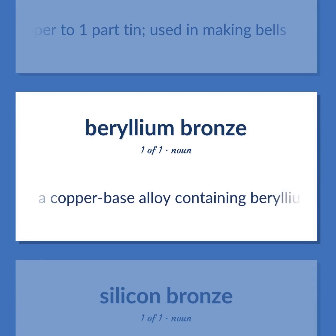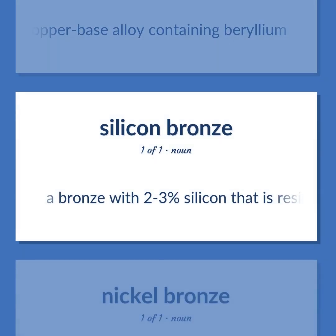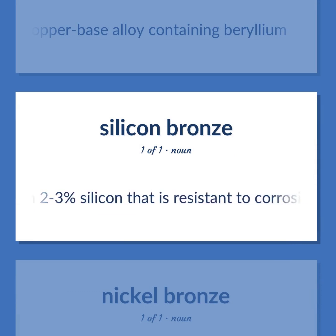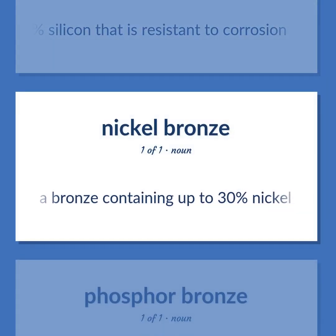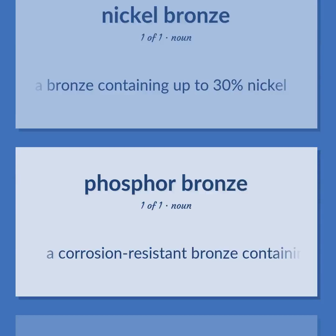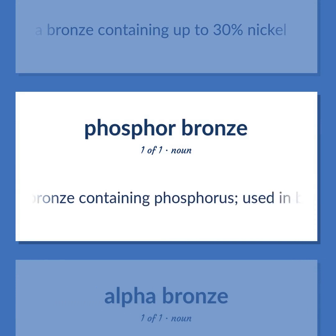A copper base alloy containing beryllium. A bronze with two to three percent silicon that is resistant to corrosion. A bronze containing up to 30 percent nickel. A corrosion-resistant bronze containing phosphorus, used in bearings and gears.